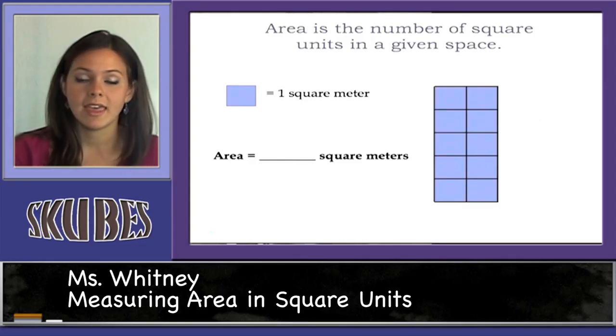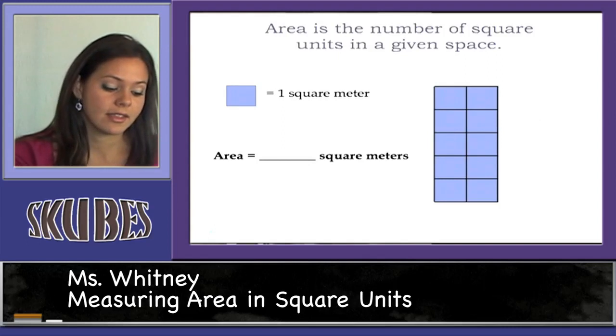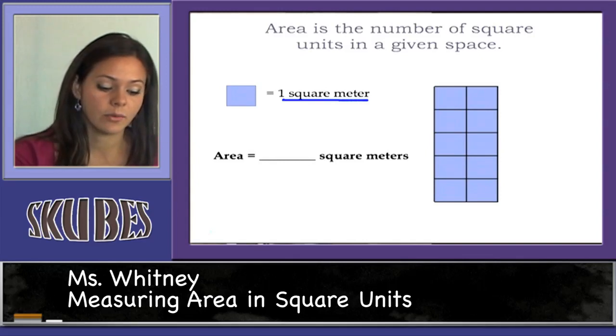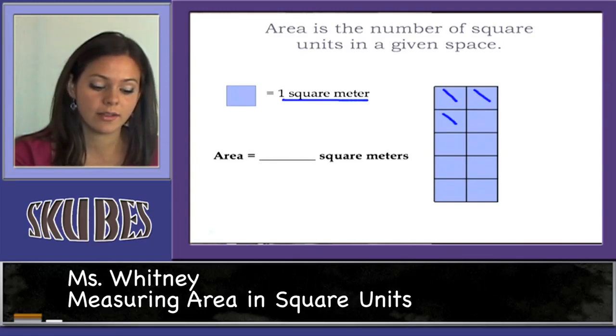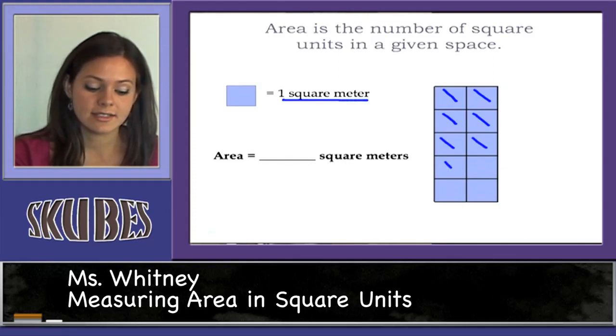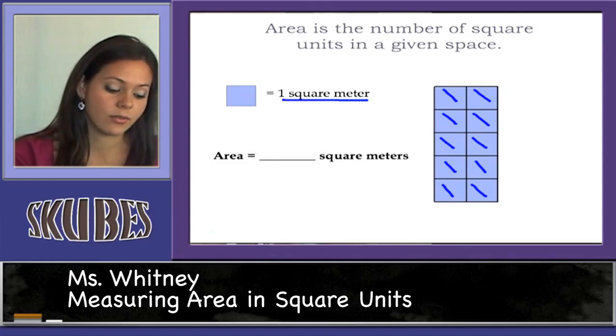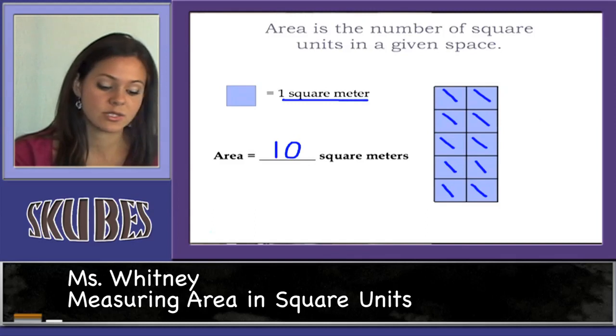Here's another example. In this example, it tells us what units we're counting by. It tells us that we are counting by square meters. 1, 2, 3, 4, 5, 6, 7, 8, 9, 10. The area of this rectangle is 10 square meters.